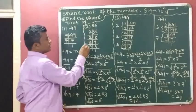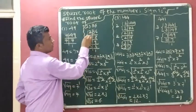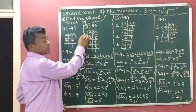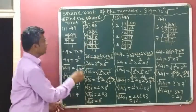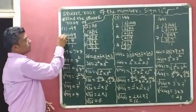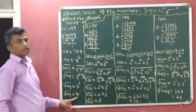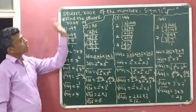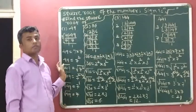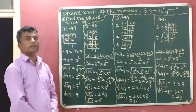For 36: from the pair of 3 select one 3, and from the pair of 2 select one 2. Then 3 times 2 is 6. For 49: from the pair of 7 select one 7. The answer is 7. So this short method makes it easy to identify the square root of any number. I hope you understand how to identify the square root.